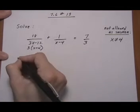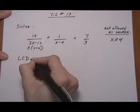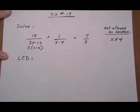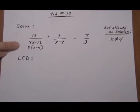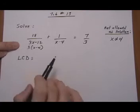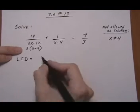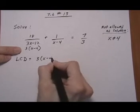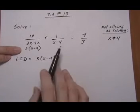So next step is build the LCD. Now building the LCD is exactly the same as we did in the last module, adding and subtracting rational expressions. Take the entire first denominator, 3 times x minus 4, and then we look at the second denominator.